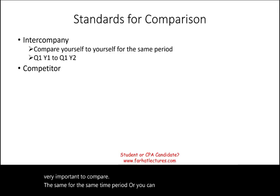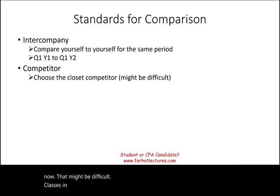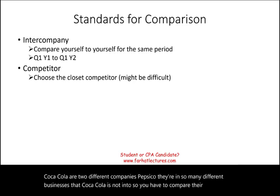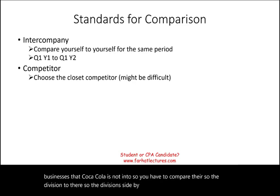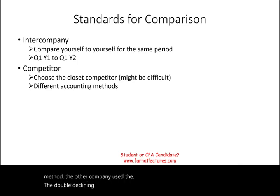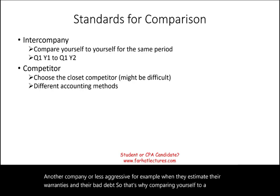Or you can compare yourself to a competitor — you have to choose a good comparable competitor. Now, that might be difficult. In college, we always say compare PepsiCo to Coca-Cola, but PepsiCo has many different businesses that Coca-Cola is not in, so you'd have to compare their soda divisions side by side. Also, different companies use different accounting methods — one company uses FIFO, another uses LIFO; one uses the straight-line depreciation method, another uses the double-declining method. One company may be very aggressive in estimating warranties and bad debt while another is less aggressive. So comparing yourself to a competitor is not as straightforward as people think.